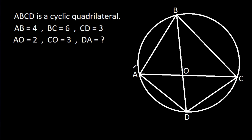In this video, we have been given that AB is 4, BC is 6, CD is 3, AO is 2, and CO is 3.